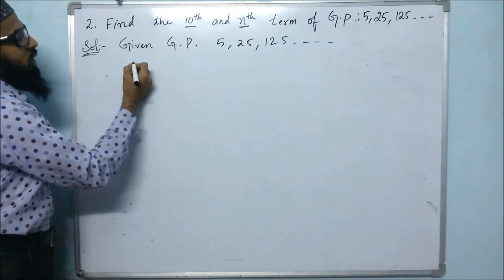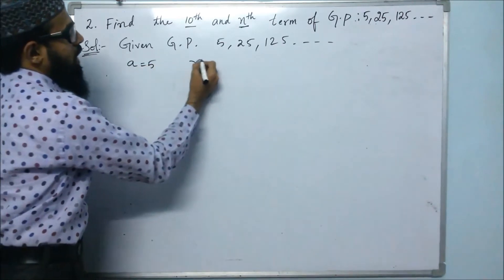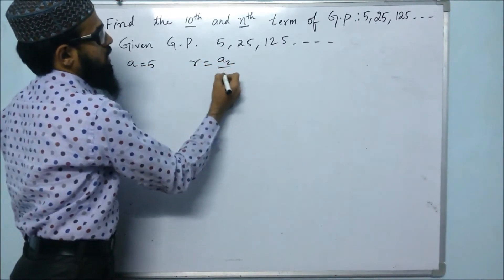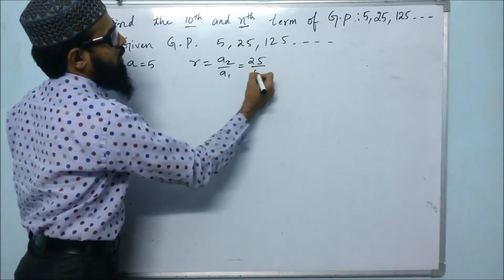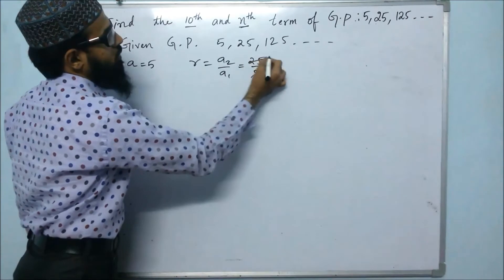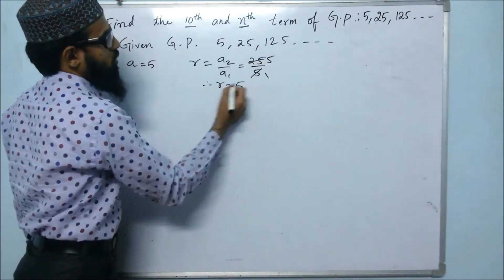For that formula, we need a. Here a is the first term, which is 5, and r is a2 by a1. So a2 is 25 and a1 is 5. 5 into 25 is 5. Therefore, r = 5.